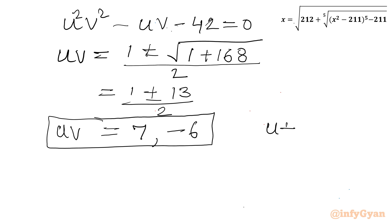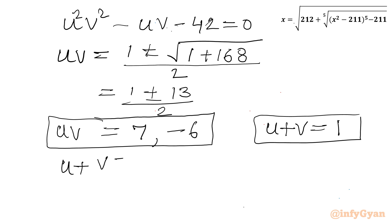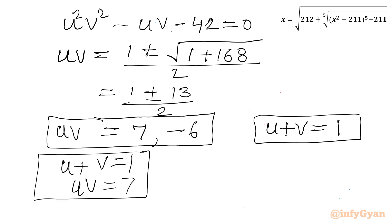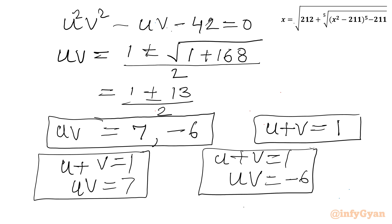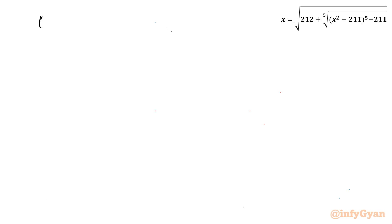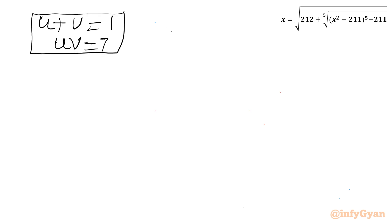We now have two systems. System 1: u + v = 1 and uv = 7. System 2: u + v = 1 and uv = −6.